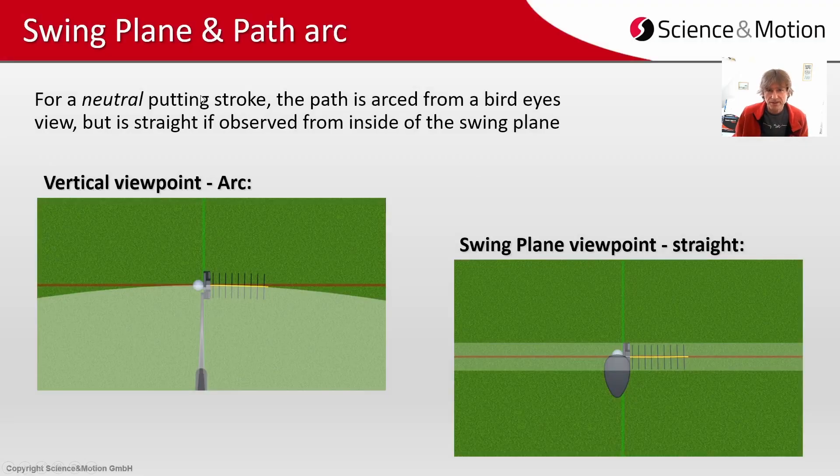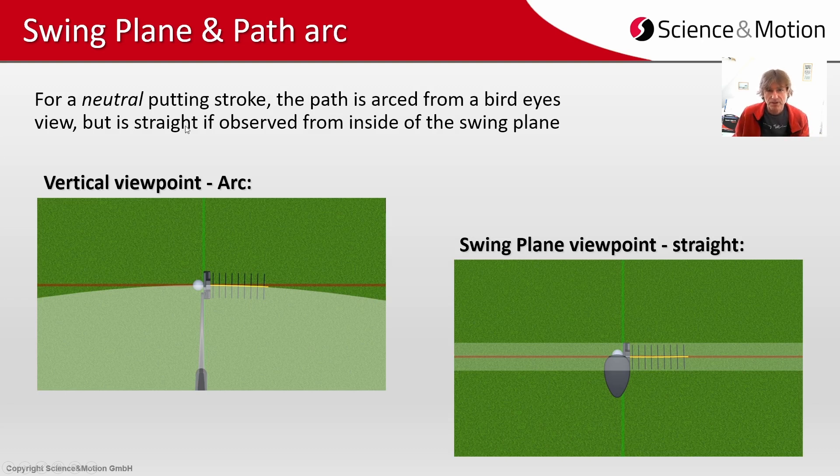Now for a neutral putting stroke where you rotate the putter only around a stable pivot in your neck for example, the path will appear arced from this bird's eye view with the eye over the ball. But if you look at your path from within the swing plane the path will appear straight. So we might say that the arc you see relative to the target line is some kind of optical illusion because the eye is outside of the swing plane.